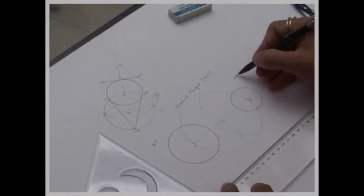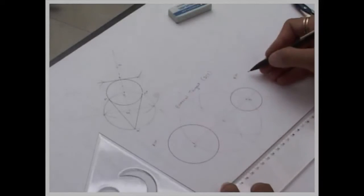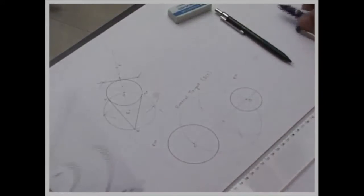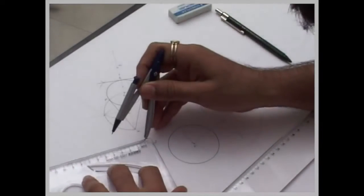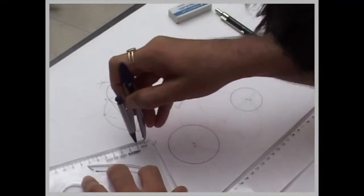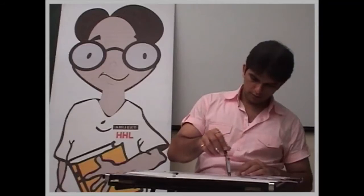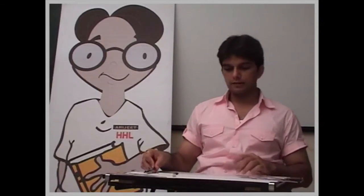Now external tangent. So in that tangent what we will do? This is of radius 30, this is 20. So what is the difference between these two circles radius? 30 minus 20 is 10. So we will take 10 and draw this inside the bigger circle.